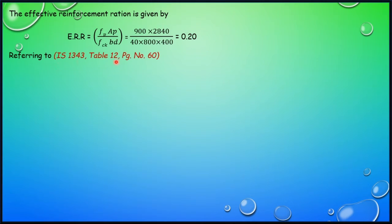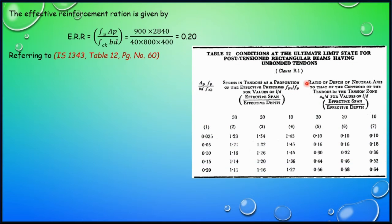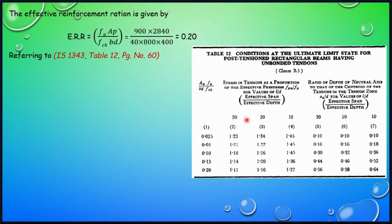Referring to IS1343 Table 12, page number 60. This table covers post-tensioned rectangular beams with unbonded tendons. The table has a column for effective reinforcement ratio and six columns: the first three are for FPU/FP values and the next three are for XU/D values, each for effective span-to-depth ratios of 10, 20, and other values.